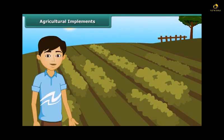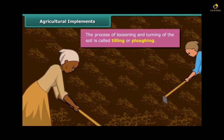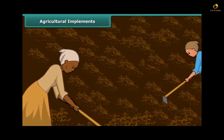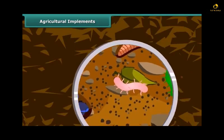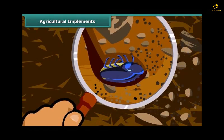Dear friends, do you know how farmers grow crops in a large field? First of all, they prepare the soil by turning and loosening it. The loosened soil helps in the growth of earthworms and microbes present in the soil. These organisms are also known as farmers' friends, and they add humus to the soil. Turning and loosening of soil brings the nutrient-rich soil to the top, which is then used by the plants.